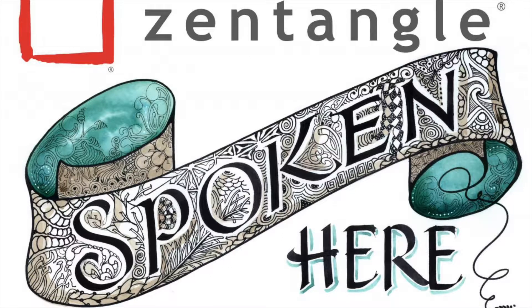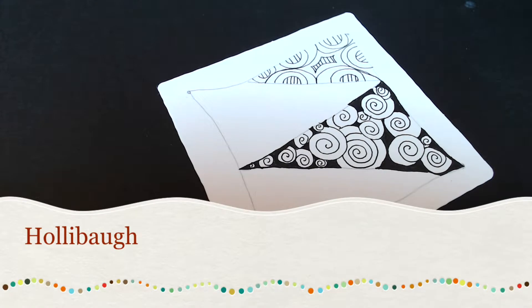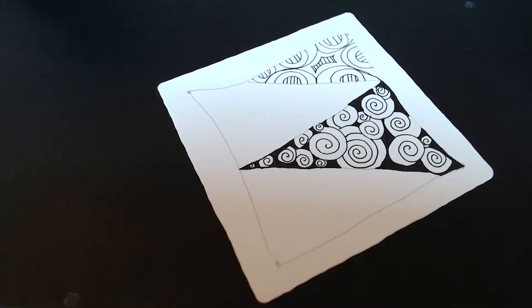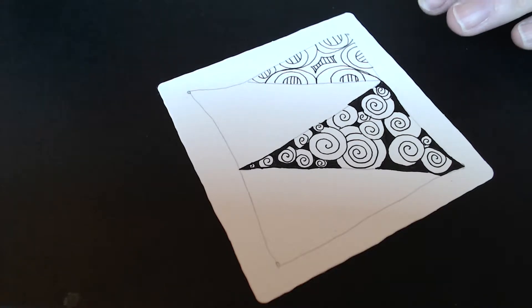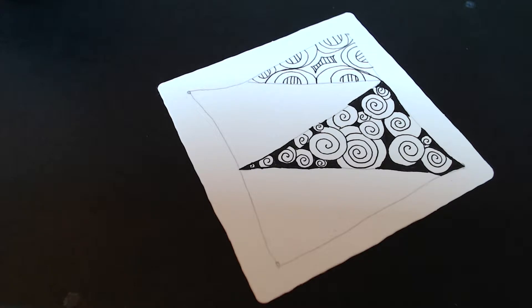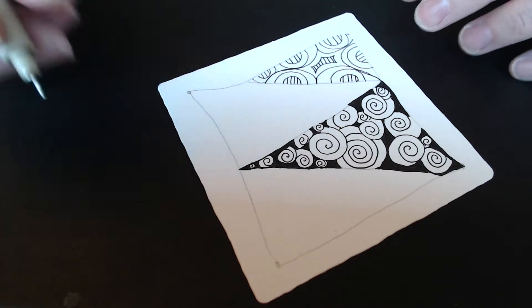We're ready for our third tangle or pattern, and this time I'm going to choose my largest block that I have left. This pattern, or as we say in Zentangle, a tangle, is called Holly bow. The names don't really have anything to do with the actual shape you're making, and that's for a reason, so that when you're actually drawing your lines you're not thinking of anything in particular. It allows your mind to free up.